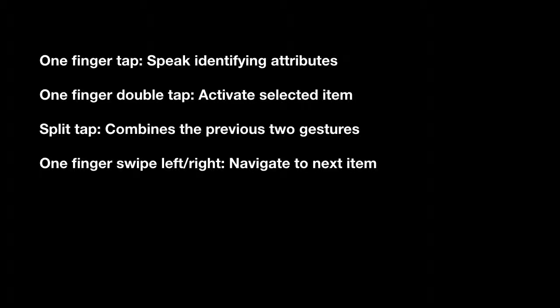The next gesture is the one-finger swipe left or right. This gesture navigates to the next visible accessibility item. Swiping right moves forward and down the screen, and swiping left does the opposite.